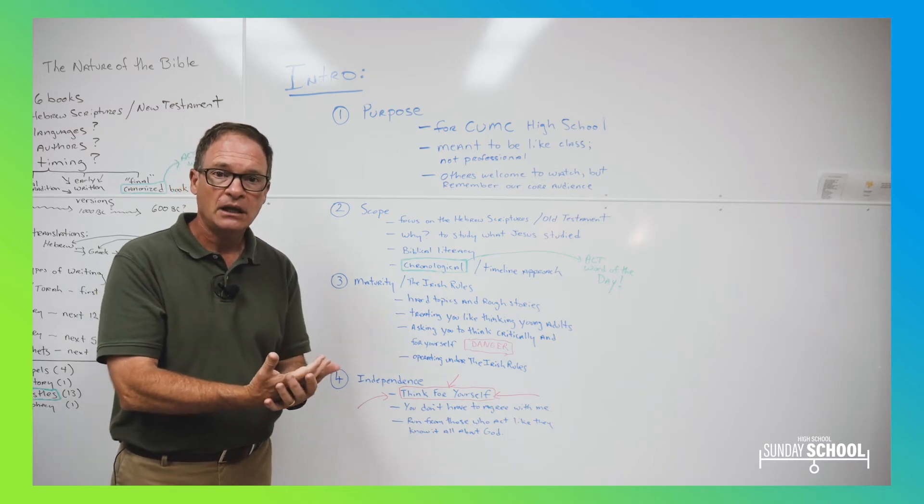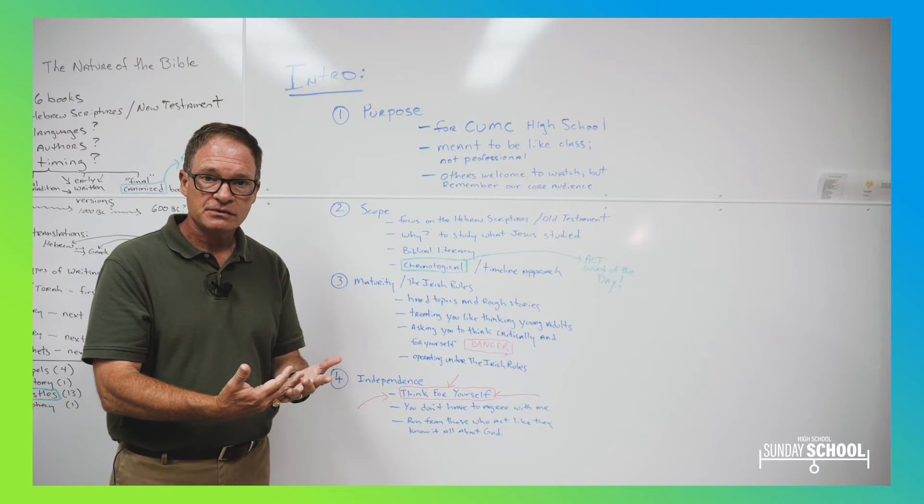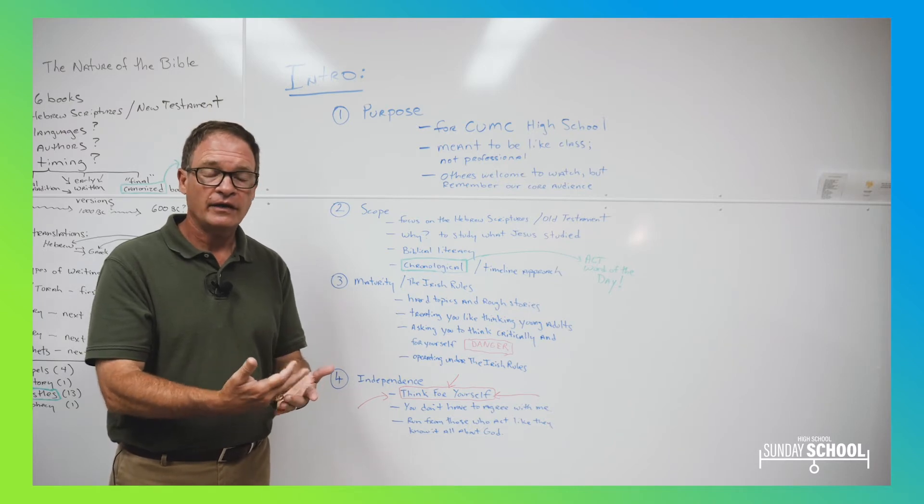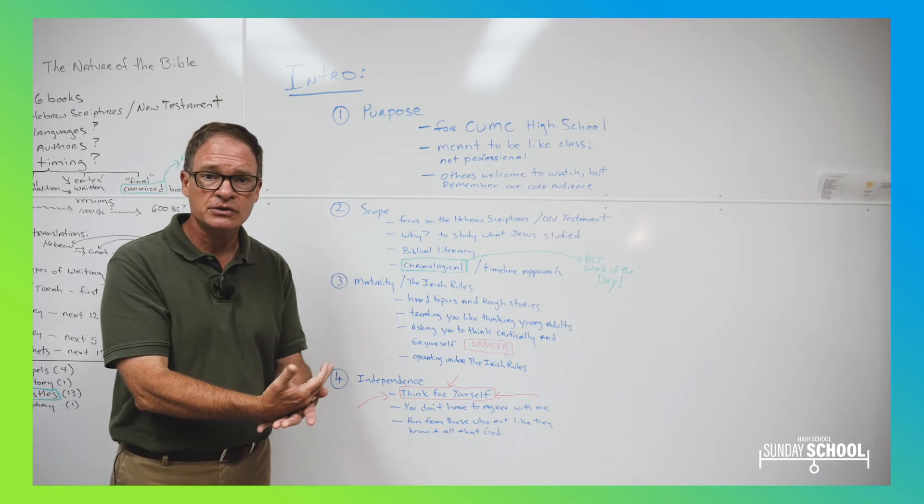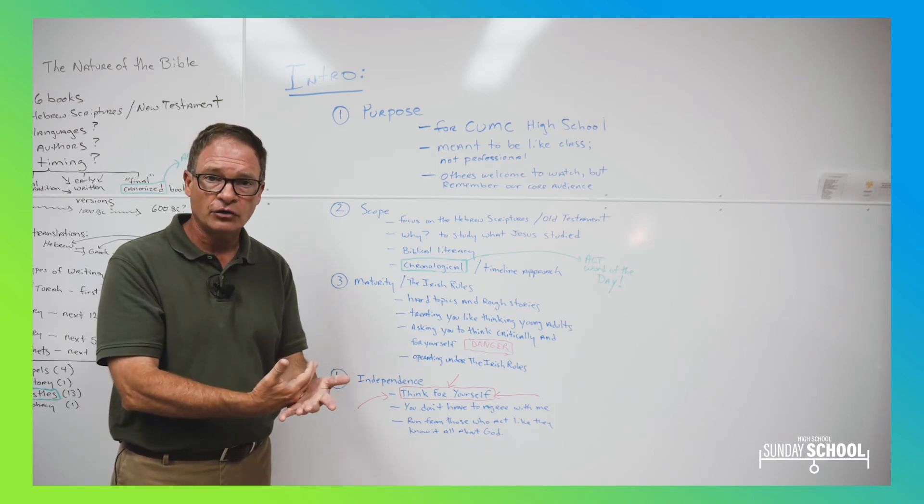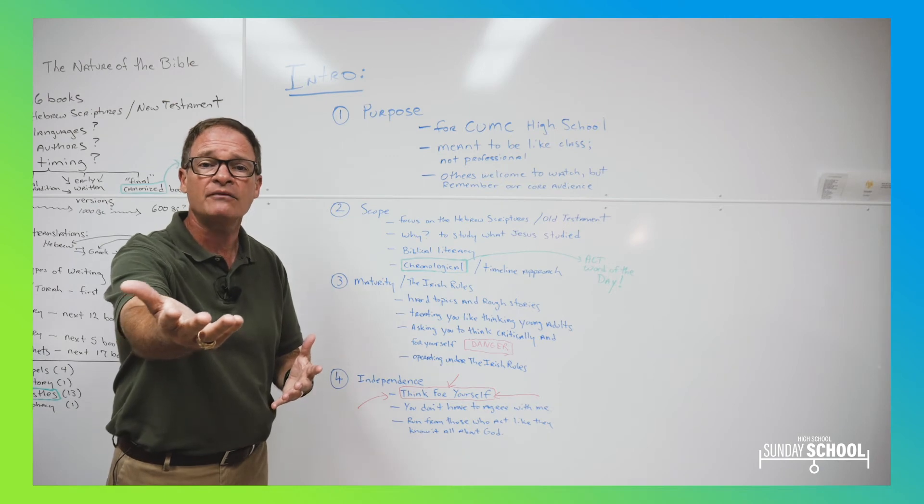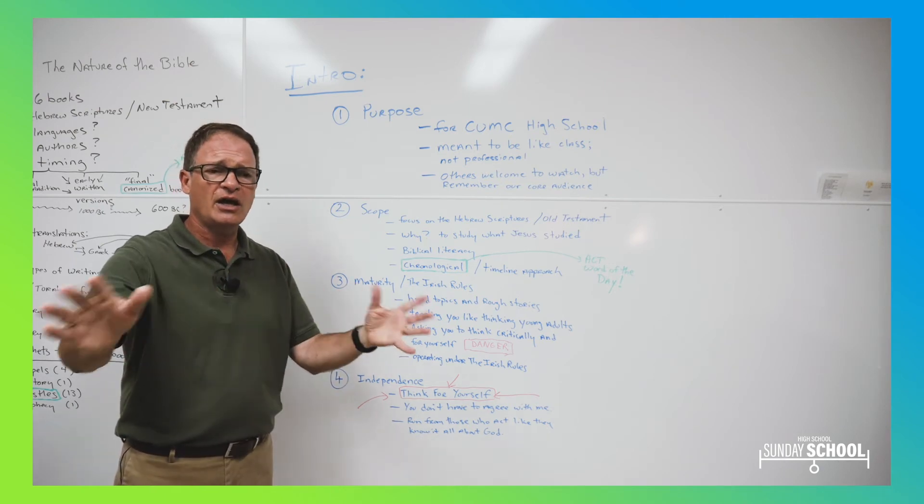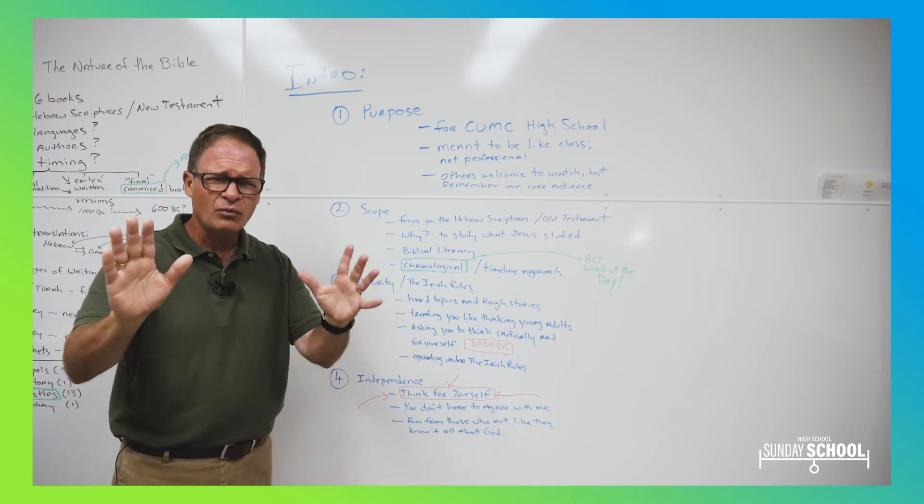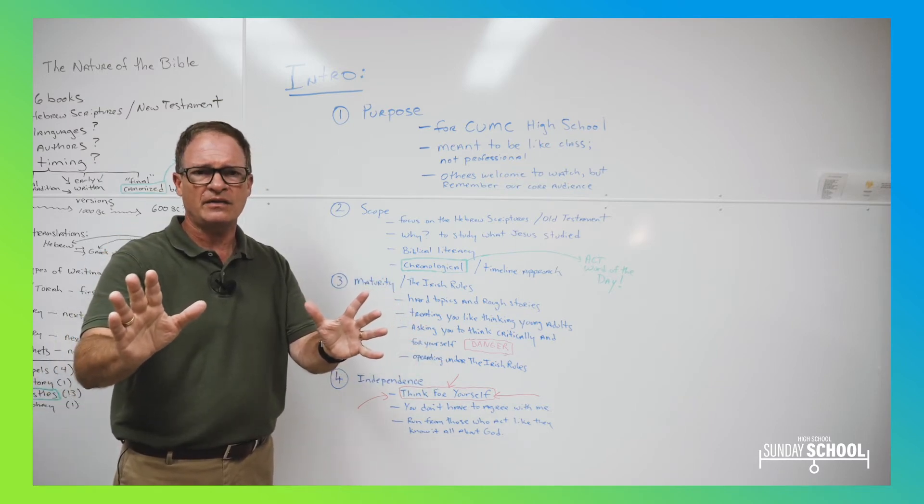They do things that are bad. They lie. They cuss. They steal. They kill. They commit murder. They have sex with people they're not supposed to have sex with. They commit adultery. Now, there, I just said something you probably had never heard in Sunday school before. That's fine. You're a ninth grader now, and you've got the internet.